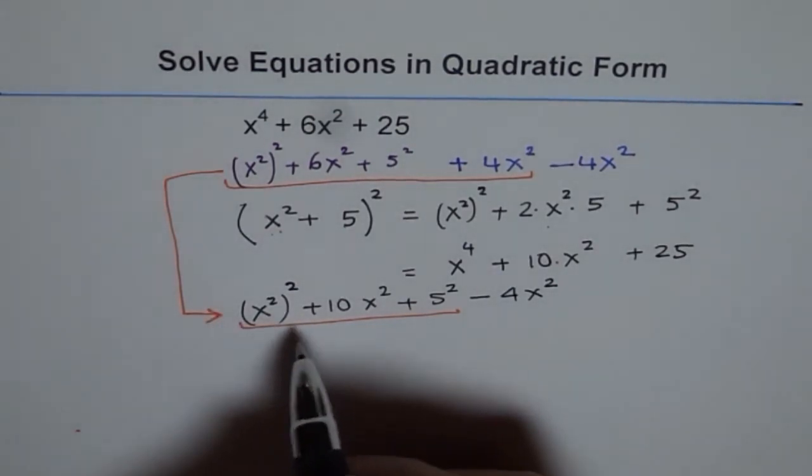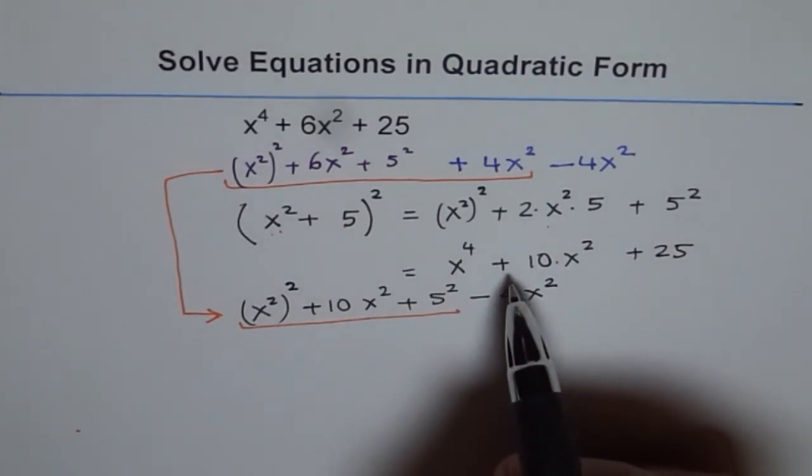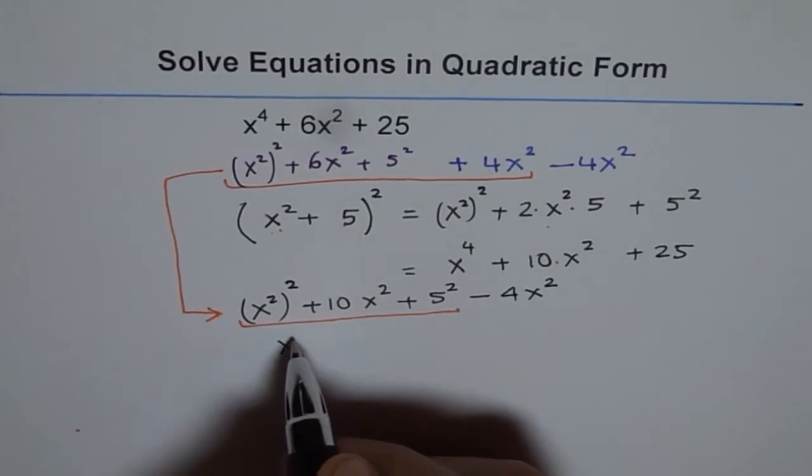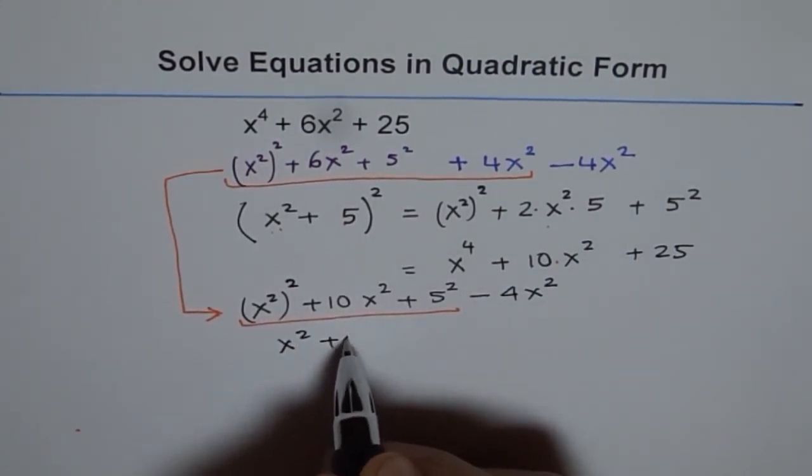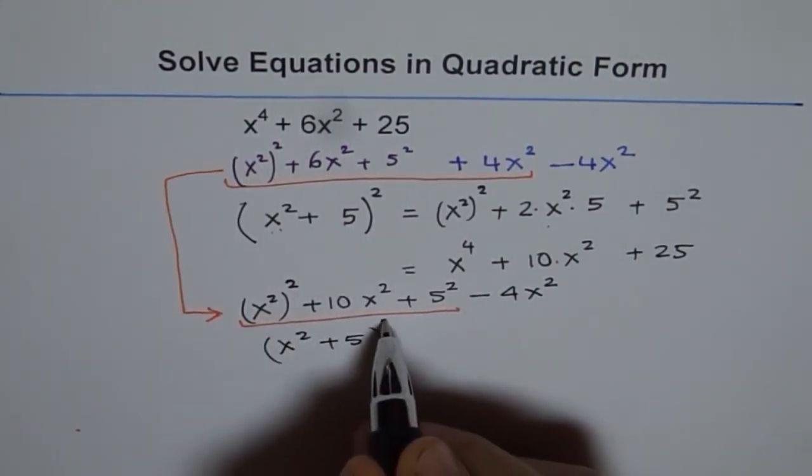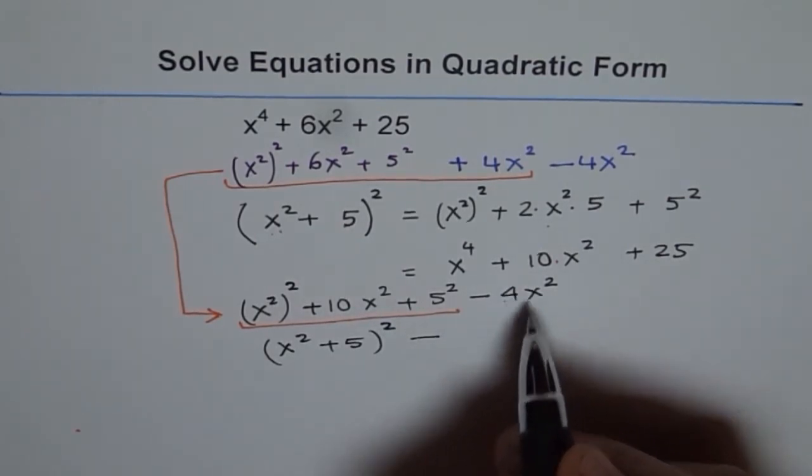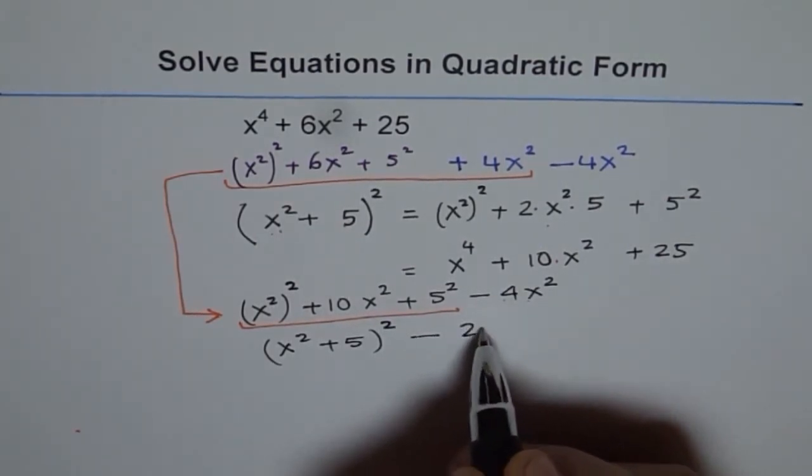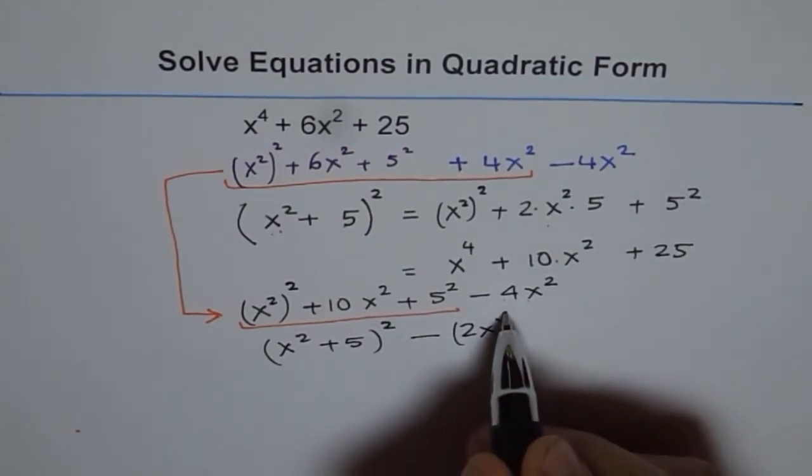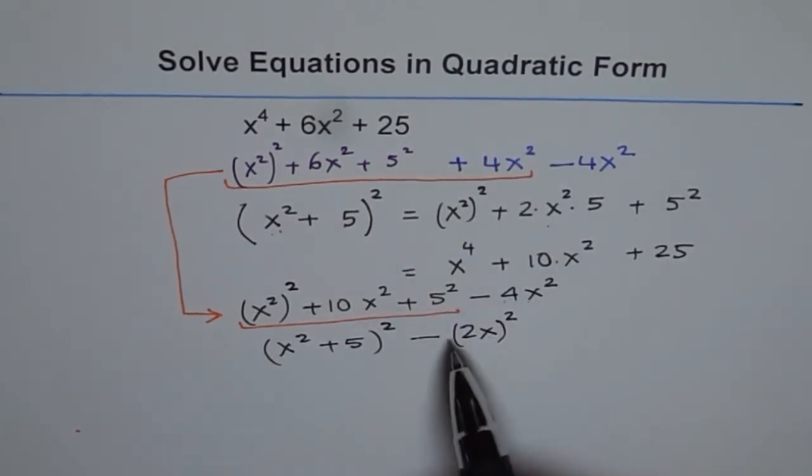Now look at it. These 3 terms are same as these 3 terms, which could be written as (x^2 + 5)^2, correct? So I will do my completing the squares method. It is kind of a completing the squares, right? And I write this as (x^2 + 5)^2 minus, and what is 4x^2? 4x^2 could be written as (2x)^2, right? So when you square it, you get 4x^2.